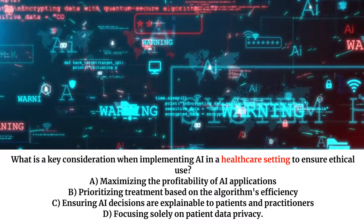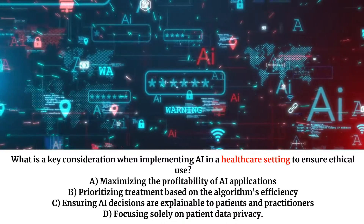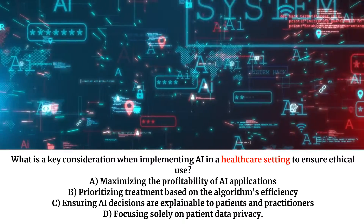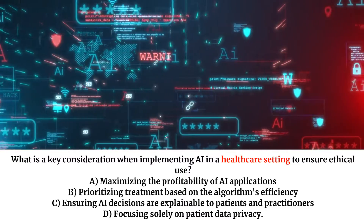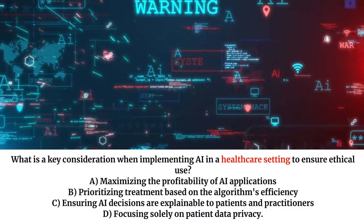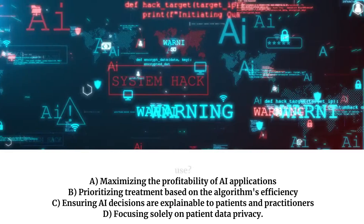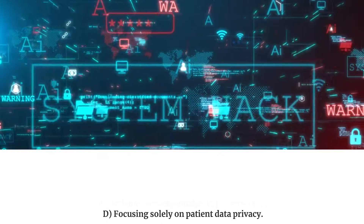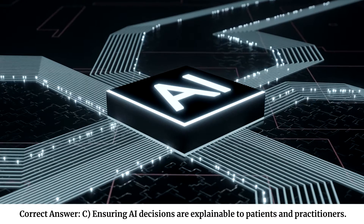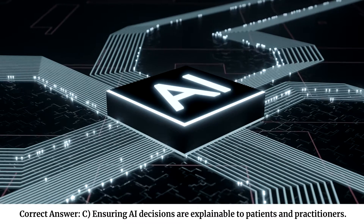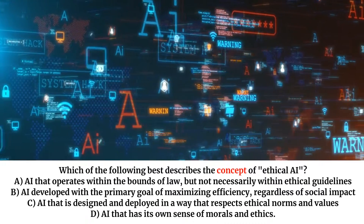What is a key consideration when implementing AI in a healthcare setting to ensure ethical use? A. Maximizing the profitability of AI applications. B. Prioritizing treatment based on the algorithm's efficiency. C. Ensuring AI decisions are explainable to patients and practitioners. D. Focusing solely on patient data privacy. Correct answer: C. Ensuring AI decisions are explainable to patients and practitioners.